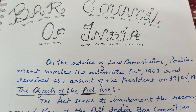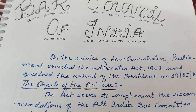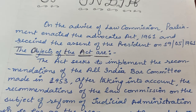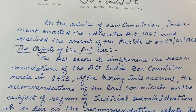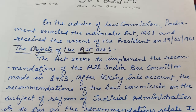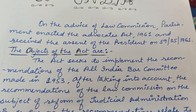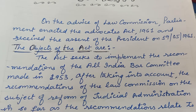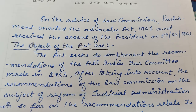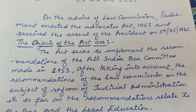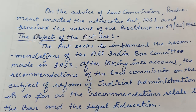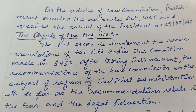Bar Council of India kaise bana tha? First I will tell you about the composition. Isko banane ki zaroorat kya padi thi? On the advice of the Law Commission, Parliament enacted the Advocates Act 1961 and received the assent of the President on 19 May 1961. Taa ki yeh banaya jaa sake Bar Council of India — yeh Bar Council jo bana hai, yeh Advocates Act ke under bana hai.